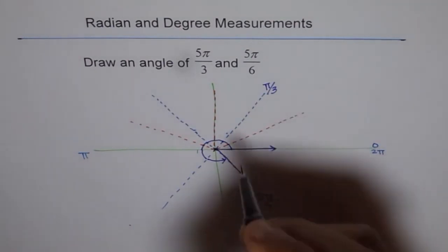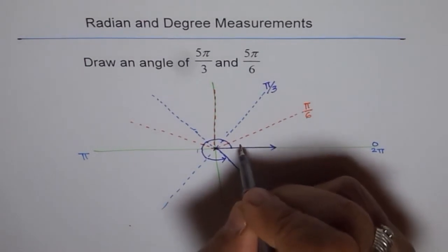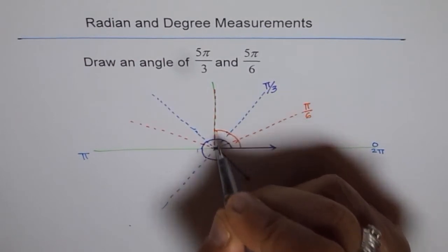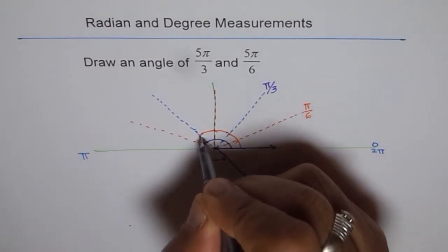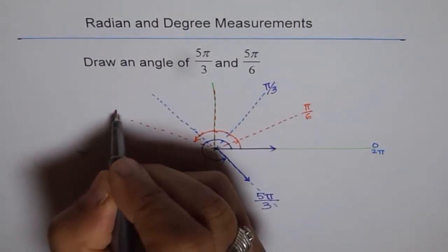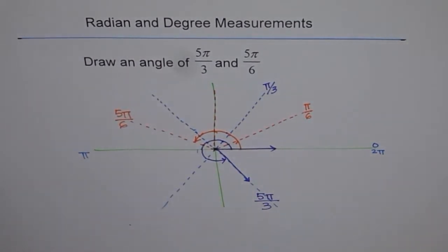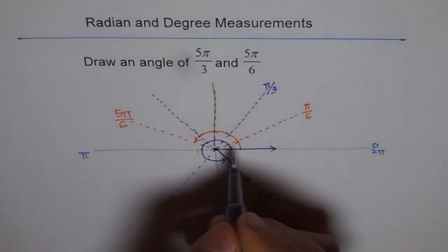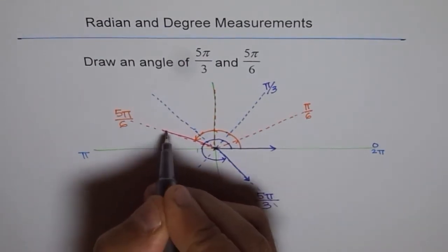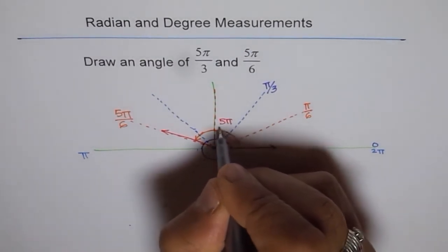5π/6. Let's count. So each is π/6 for me. So this is π/6. So 1π/6, 2π/6, 3π/6, 4π/6 and 5π/6. That's final. So this one is 5π/6. So let's draw this. So here initial arm will overlap and the terminal arm will be here. So this will be our 5π/6. Do you see that?